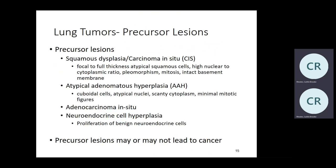Precursor lesions: know your squamous dysplasia and carcinoma in situ — these are precursor lesions for squamous carcinoma. Know your atypical adenomatous hyperplasia (AAH). There is a size criterion: up to five millimeters. Anything less than five millimeters is called atypical adenomatous hyperplasia. If it is more than five millimeters, what do you call that? Bronchioloalveolar carcinoma.